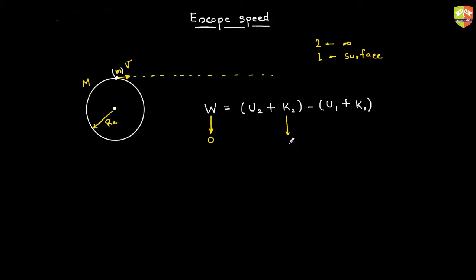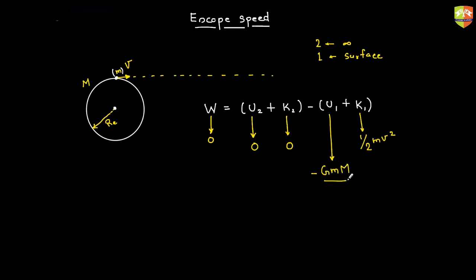At infinity, kinetic energy is zero — it has just reached infinity. U2, the potential energy between small m and capital M at infinity, is also zero. K1, the initial kinetic energy, is half m v squared. U1 is minus GMm divided by R_e. Substituting these values, everything else is zero, and small m cancels, giving half v squared equals GM over R_e.